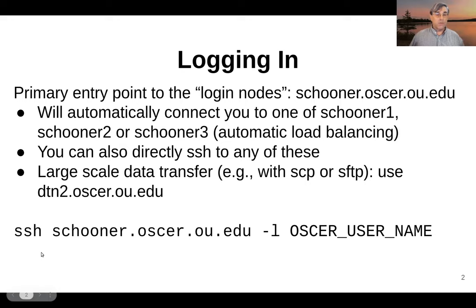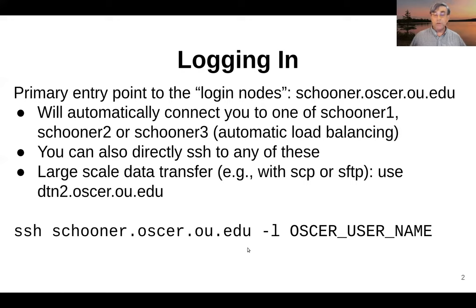For those of you who are just starting with SSH, this is the command line: ssh schooner.oscar.ou.edu. By default, SSH will assume the same user ID as you're logging in from. If it's different, you'll have to add a dash L and your OSCAR username. At that point, you'll be prompted for a password, or if you have already set up SSH keys, you'll be let in automatically.